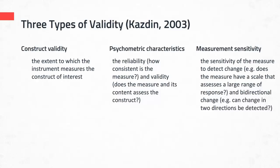When Kasdan said construct validity, he meant the extent to which an instrument measures the construct of interest. So if I'm interested in the construct of joy, I want to make sure I use an instrument that actually measures joy. Psychometric characteristics refer to the reliability and validity of the instrument — how consistent is the measure, and does it assess the construct it's intended to assess?